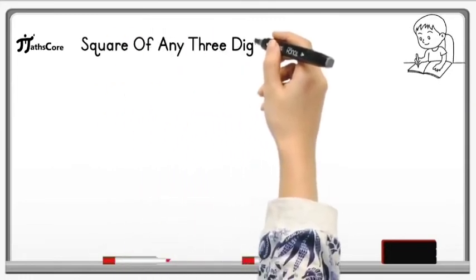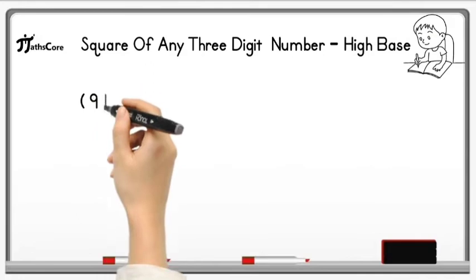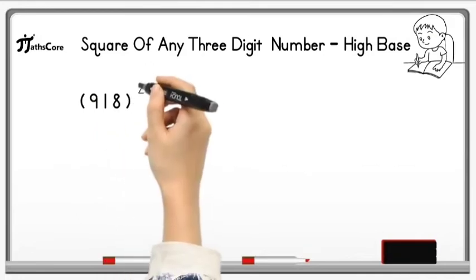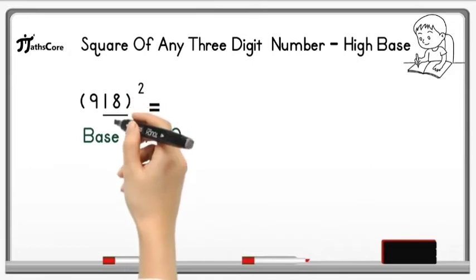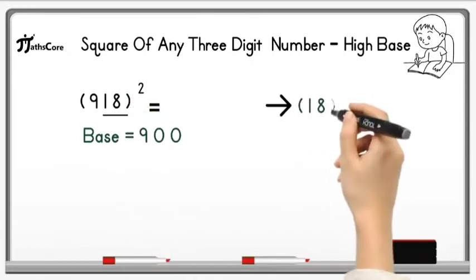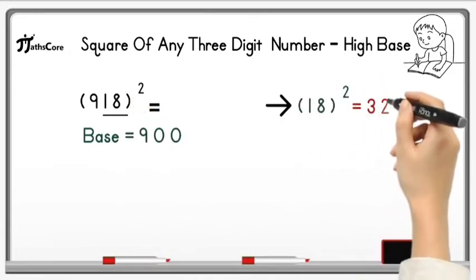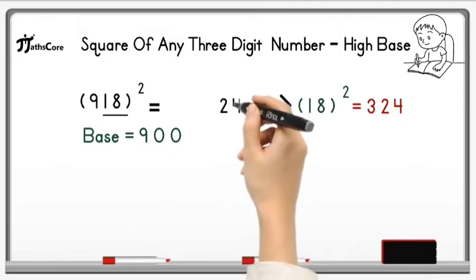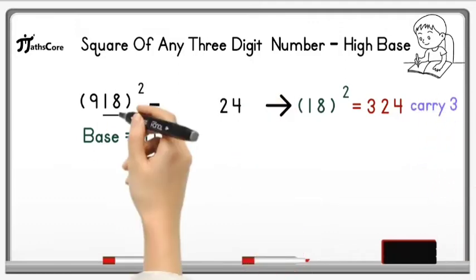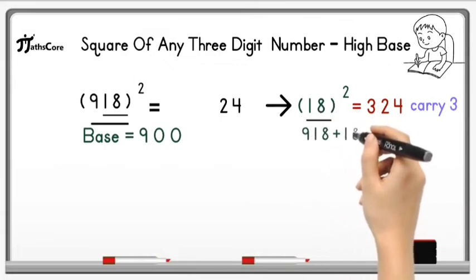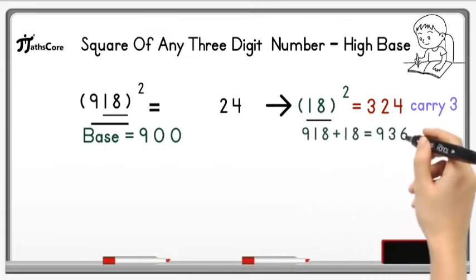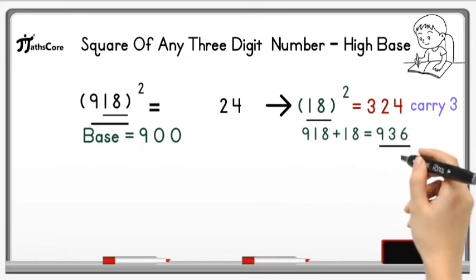Let's solve last example on it. Example is 918 square. For 918, base is 900. So first of all, take unit and tens place digit together and find out square of it. So 18 square is equal to 324. So write down 24 in the product and take 3 as a carry.